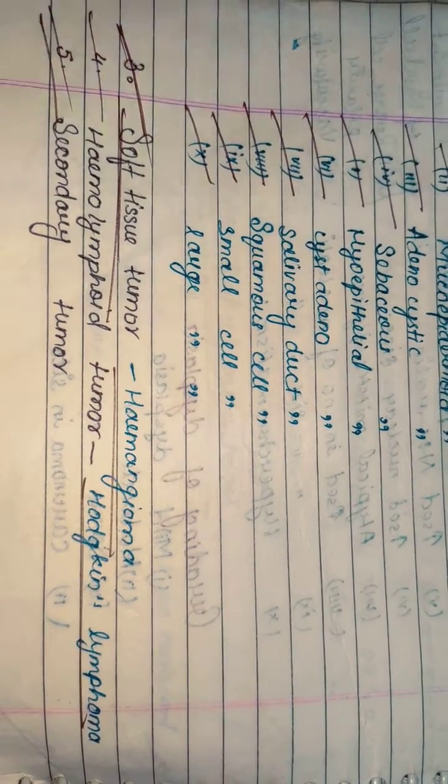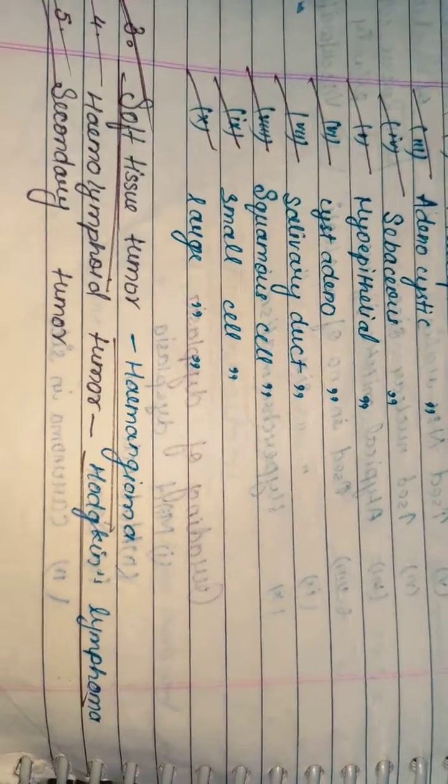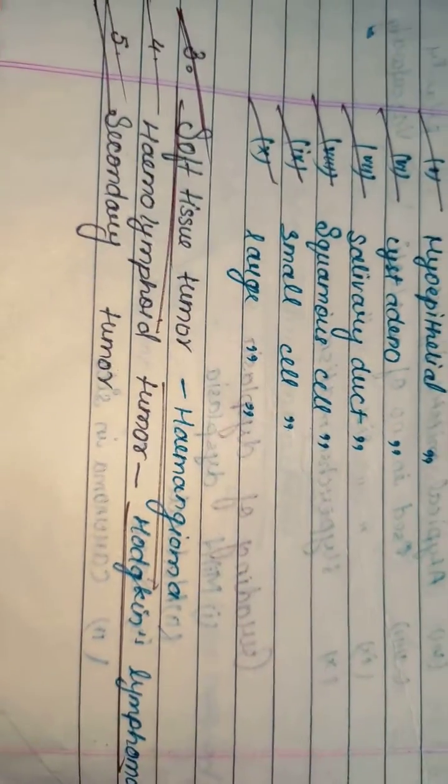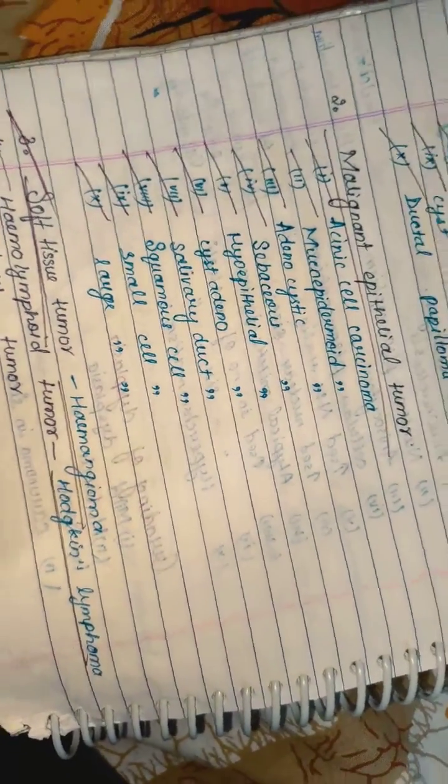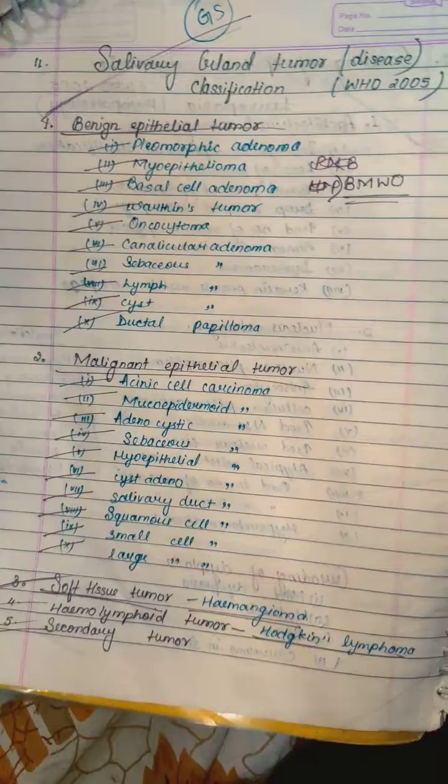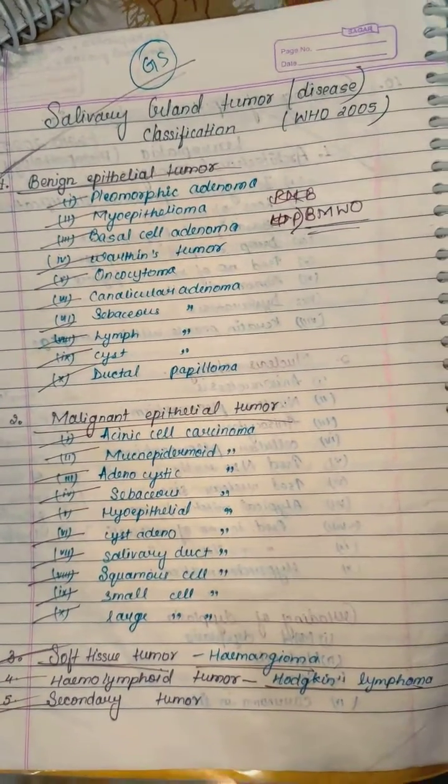And now, hemolymphoid tumors, which include Hodgkin lymphoma and secondary tumors. These are all important, but not as important as benign epithelial tumors and malignant epithelial tumors.